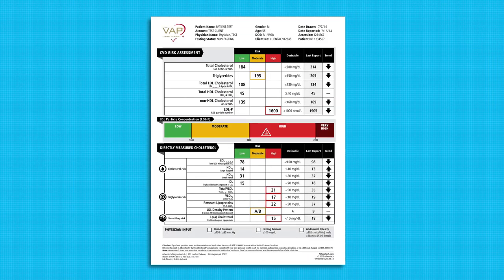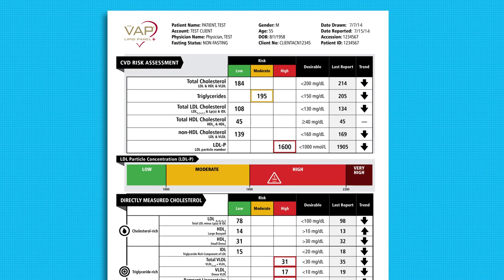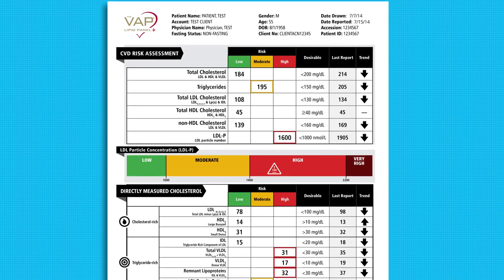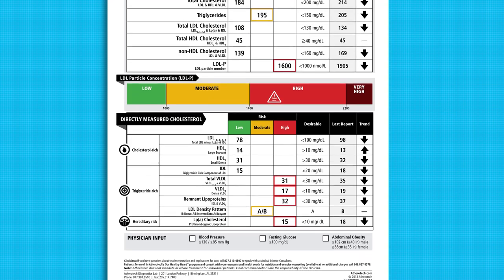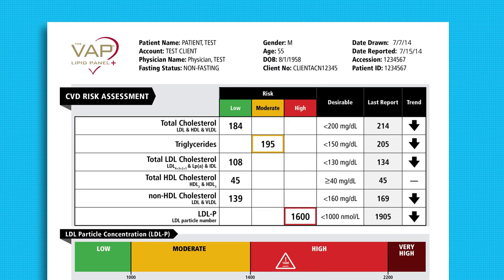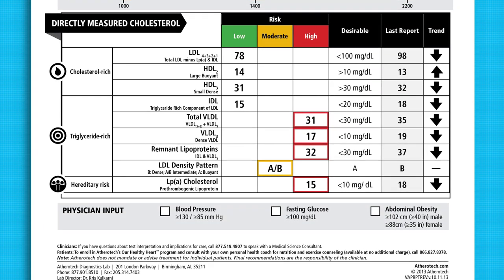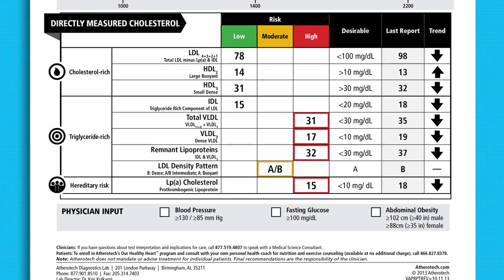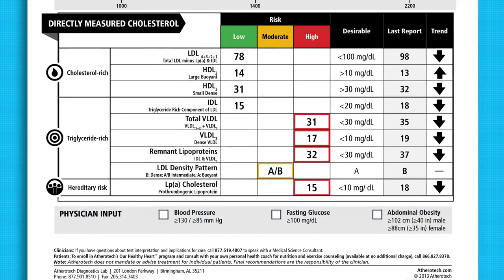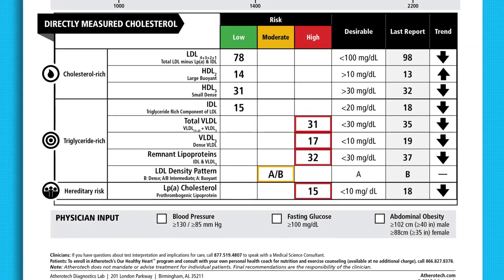The end result is a comprehensive report providing an accurate picture of risk in a simple and easy-to-understand format. The top portion of the report provides a dashboard summary to indicate potential risk. The bottom section of the report indicates what is driving that risk, whether it be cholesterol, triglycerides, or hereditary factors.